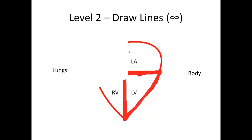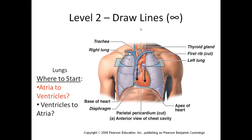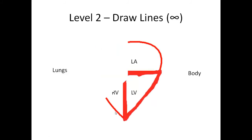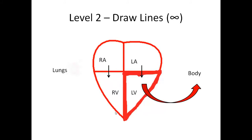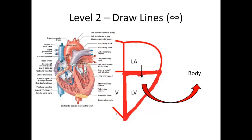The left ventricle has a thicker wall. The heart is a muscle — cardiac muscle. Just like skeletal muscle gets bigger when you work it out, the left ventricle is working harder because it's pumping blood a further distance. The lungs are right next to the heart, but the rest of the body is a greater distance away. So the left ventricle pumps to the body, which is further than the right ventricle pumping to the lungs — giving it a thicker myocardium.